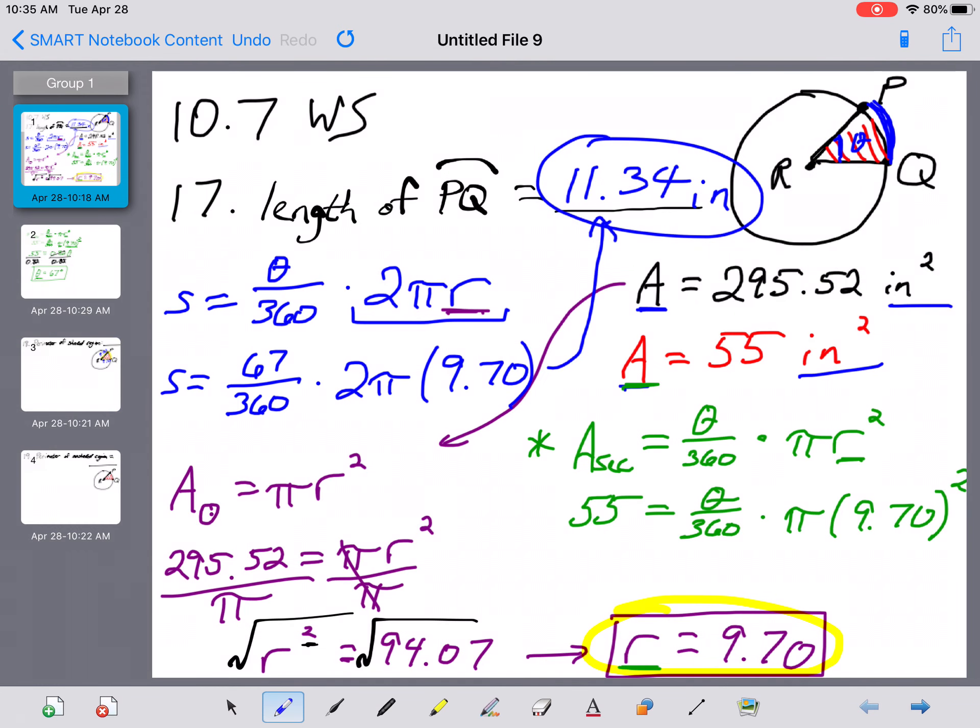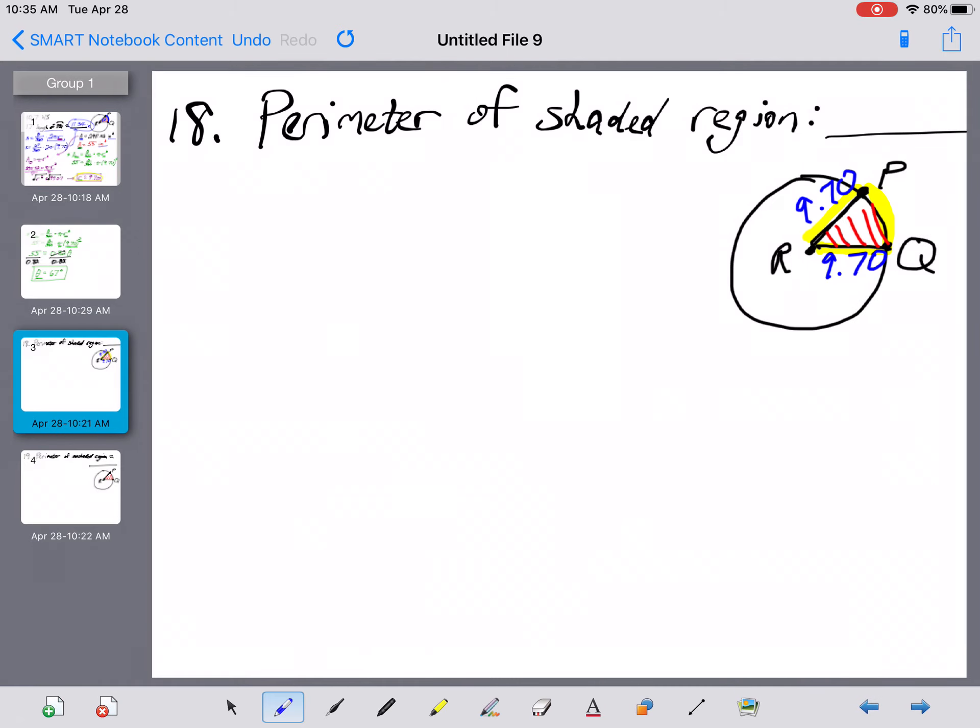And the whole point of problem number 17 is that we finally found that the length of PQ here was 11.34 inches. So PQ is 11.34, and that's what we need here.